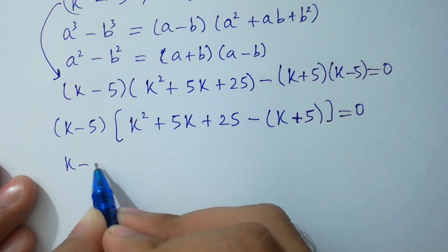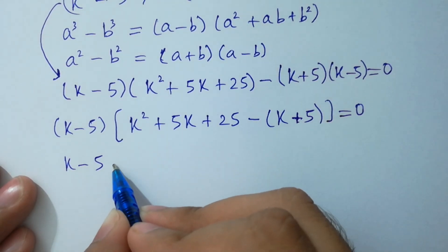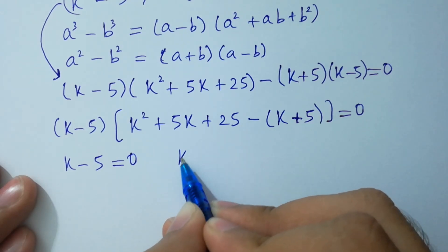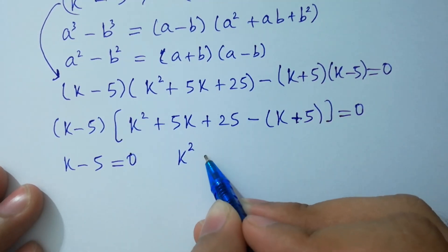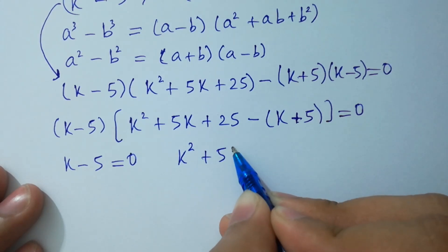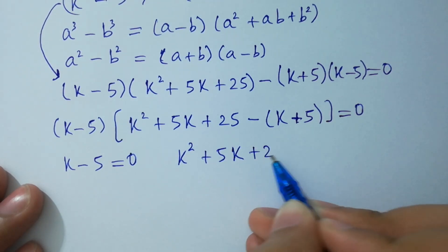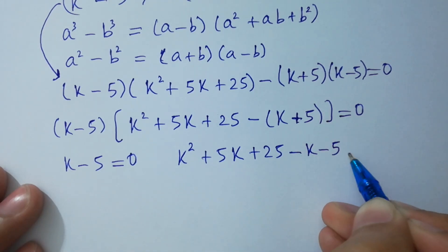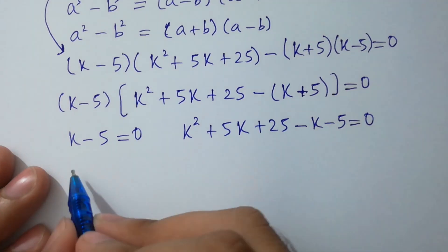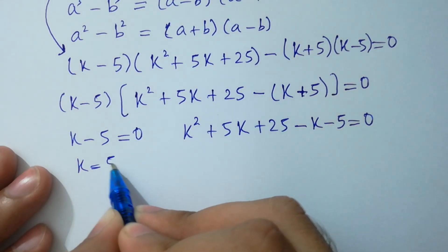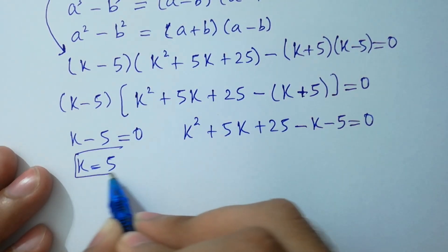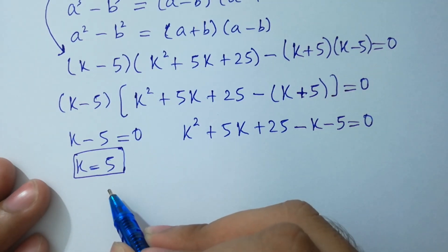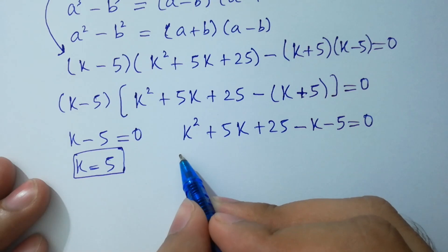So either k minus 5 equals 0, giving k equals 5 as our first real solution, or k squared plus 5k plus 25 minus k minus 5 equals 0.